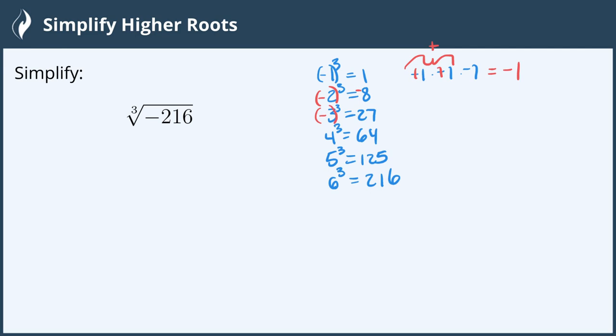So if I put this negative in for every single one of these, then I end up with a negative here, and that then tells me that negative 6 cubed equals negative 216. So I can even write it negative 6 cubed.